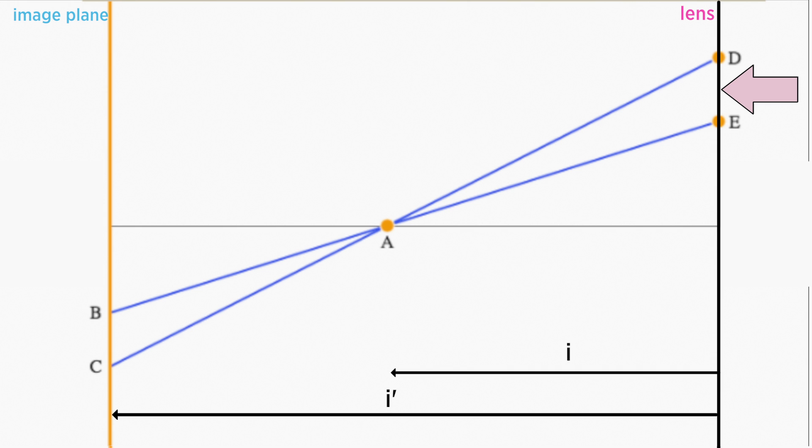We know what DE is, that's the radius of the aperture, but we don't know AB or AE. I'm also going to add two new points, F and G. This gives us two new right triangles, ABF and AEG, which are also similar.